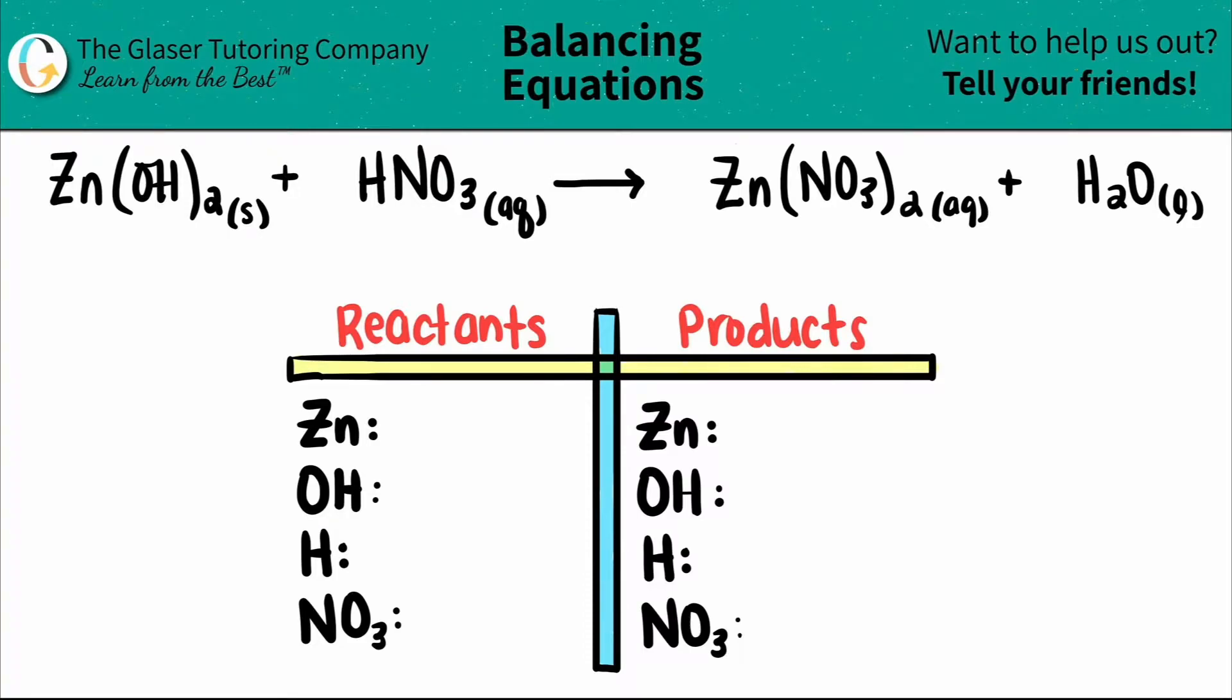Today, we are going to be balancing the equation of Zn(OH)2 plus HNO3, which will yield Zn(NO3)2 plus water, which is H2O.